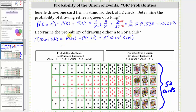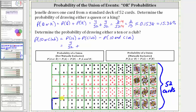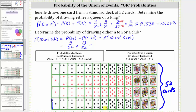For the probability of selecting a ten, since there are four tens in the deck, there are four favorable outcomes out of 52 cards, giving us 4/52. Plus the probability of a club — there are thirteen clubs in the deck, so we have 13/52. Then minus the probability of a ten and a club: there's only one card that is both a ten and a club, which is the ten of clubs, giving us one favorable outcome out of 52, so minus 1/52.